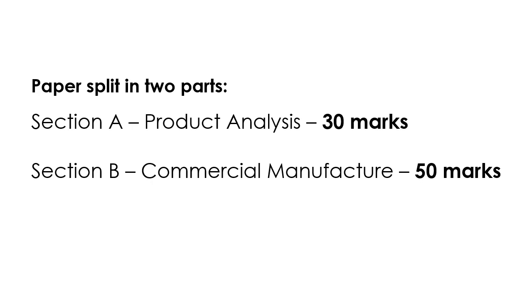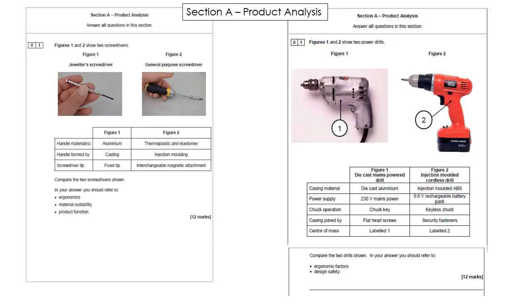Paper 2 is split into two sections. Section A is all about product analysis — you might be given a picture to look at and asked to compare products. Section B is more general. It's likely you'll come across a question where you're shown two different products, given some information about them, and asked to compare them.